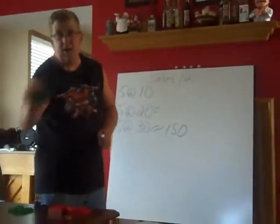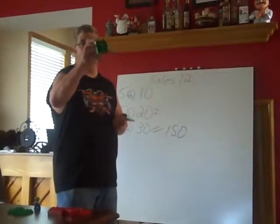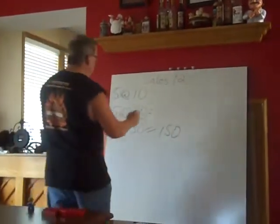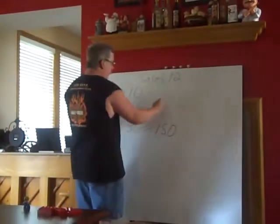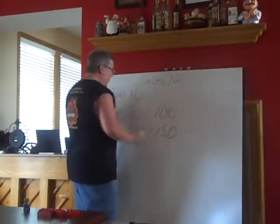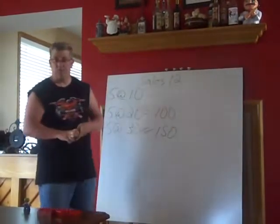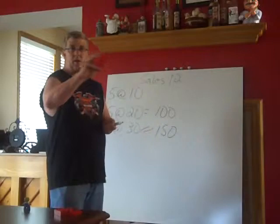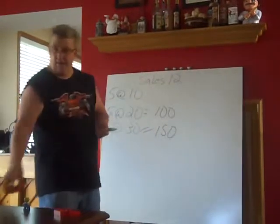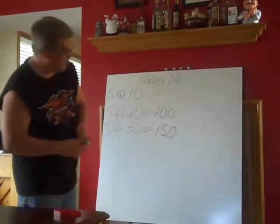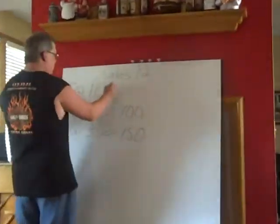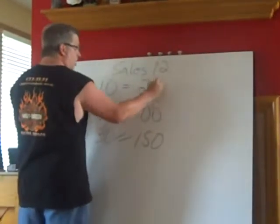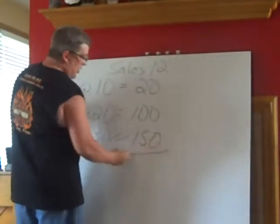The next five are going to be our five green ones going out the door. So we have five at $20, which is $100. Finally, our last two are going to be from our original items — two at $10, so that's $20.